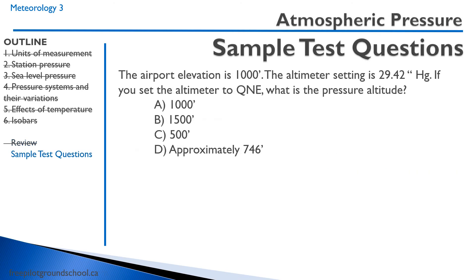First sample test question — you can expect something like this on an exam. The airport elevation is 1,000 feet and the altimeter setting is 29.42 inches of mercury. If you set the altimeter to QNE, what is the pressure altitude? QNE is 29.92 inches of mercury. Going from 29.42 to 29.92 is half an inch of mercury, and each 0.1 inch equals 100 feet, so that's 500 feet. Added to the airport elevation of 1,000 feet, the correct answer is B: 1,500 feet is the pressure altitude when set to 29.92.